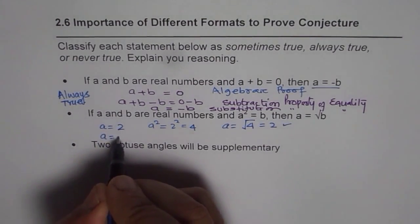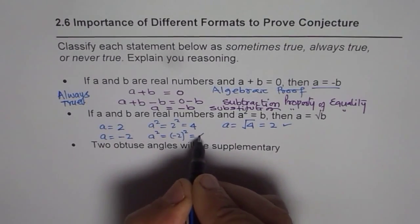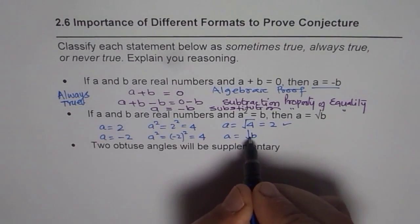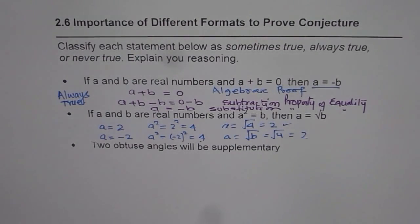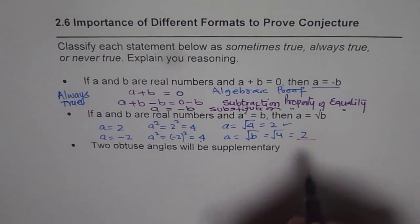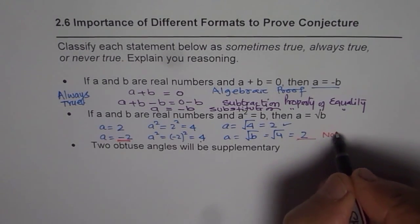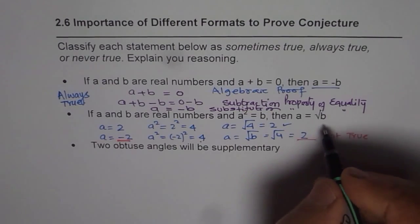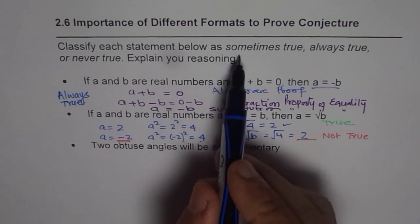How about if A equals minus 2? In that case, A squared equals minus 2 squared, which is 4. Now the statement says A should equal the square root of B, and B is 4, so the square root of 4 is 2. But we started with A equals minus 2, so in this case it is not true. In the previous case, when A was a positive value, it was true. So our conclusion is that it is sometimes true.